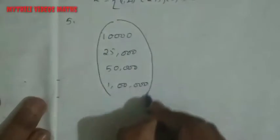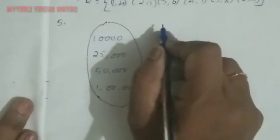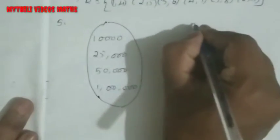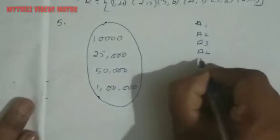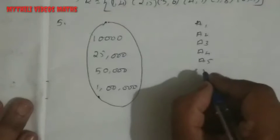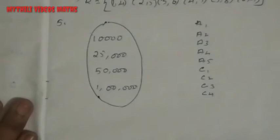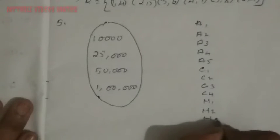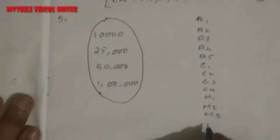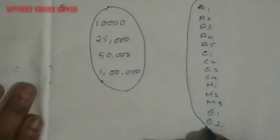Then codomain. First, assistants A1, A2, A3, A4, and A5 - 5 assistants. Then clerks C1, C2, C3, C4 - 4 clerks. Then third one, managers M1, M2, M3 - 3 managers. And then executive officers E1 and E2. So here we have to write like this: range or codomain.